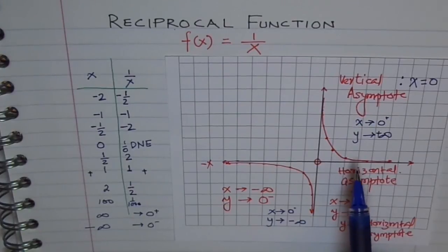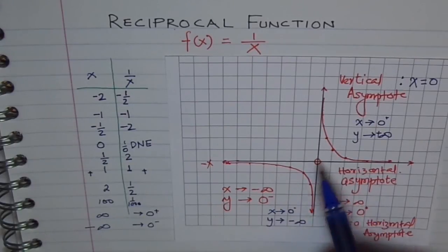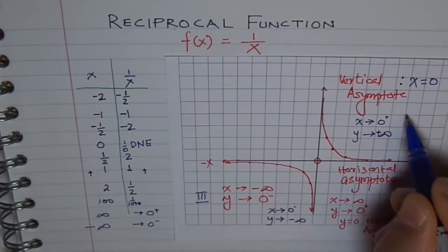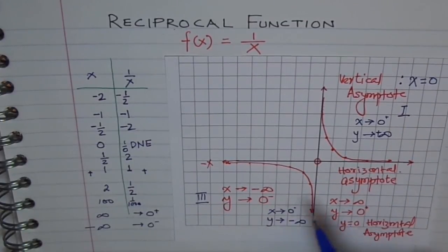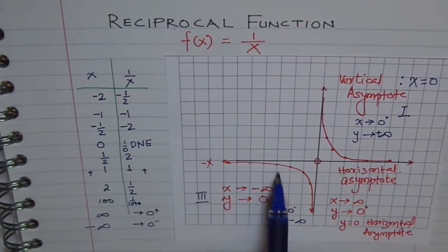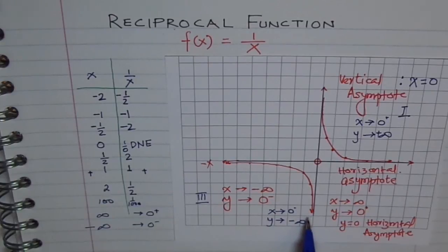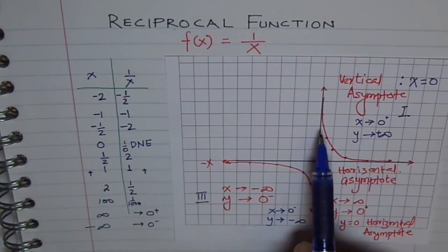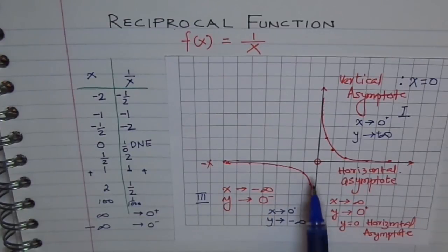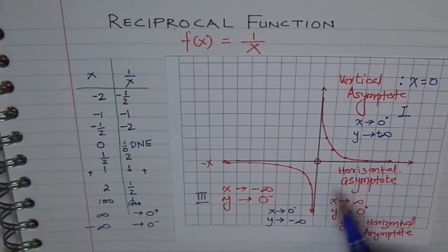You will also see a couple of other characteristics of our graph of 1 over x. You will find that our function is always in quadrant 3 and quadrant 1. Second, if we move from left to right, the function value is decreasing — it is always decreasing. It is not defined at 0, but in its domain, which does not include 0, the function always decreases.